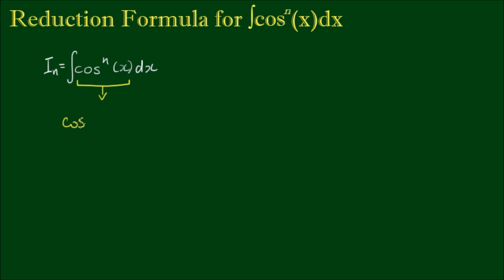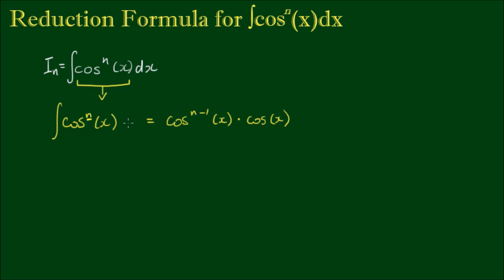We have cosine to the n-th power of x on the left-hand side. If I reduce this power by 1 and write cosine to the n-1 power, I need to multiply by cosine x to make both sides of the equation equivalent. Then we apply the integral to both sides.